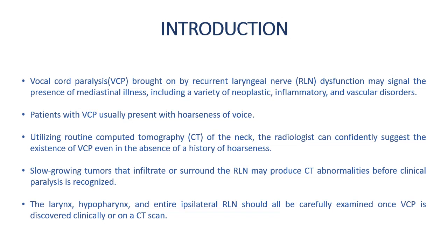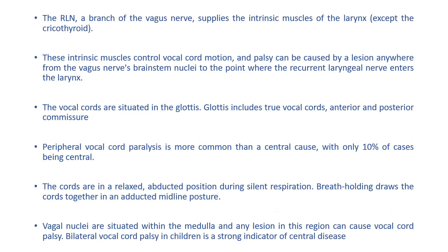The larynx, hypopharynx, and entire recurrent laryngeal nerve should be carefully examined once vocal cord palsy is discovered clinically or on a CT scan. The recurrent laryngeal nerve, a branch of the vagus nerve, supplies the intrinsic muscles of the larynx except the cricothyroid, which is supplied by the superior laryngeal nerve. These intrinsic muscles control vocal cord motion, and palsy can be caused by a lesion anywhere from the vagus nerve brainstem nuclei to the point where the recurrent laryngeal nerve enters the larynx.